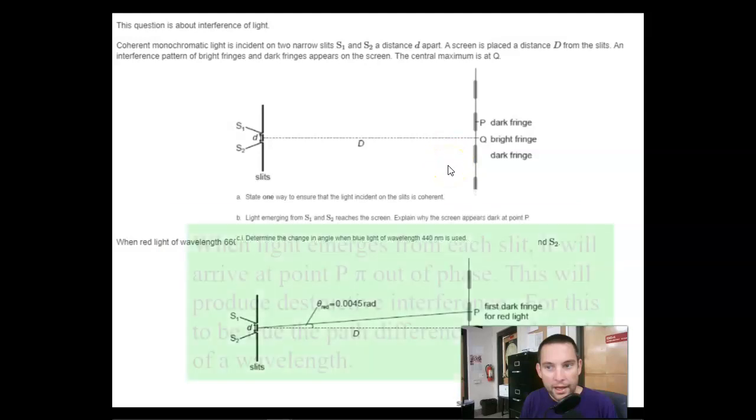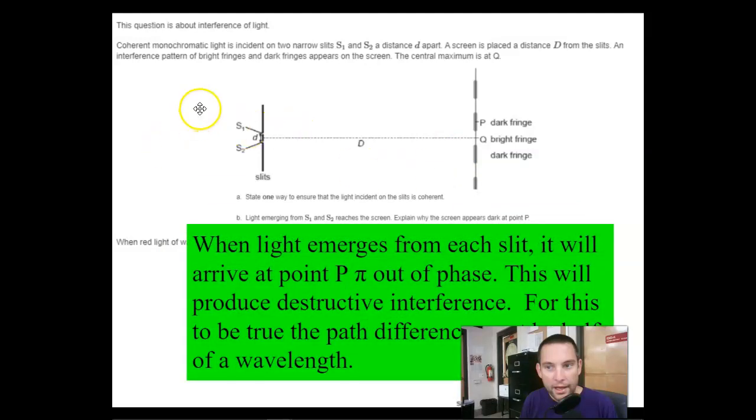On to B, explain why the screen appears dark at point P. It's going to be dark at point P because it's going to arrive pi out of phase. This will produce destructive interference. For this to be true, the path difference must be half of a wavelength.